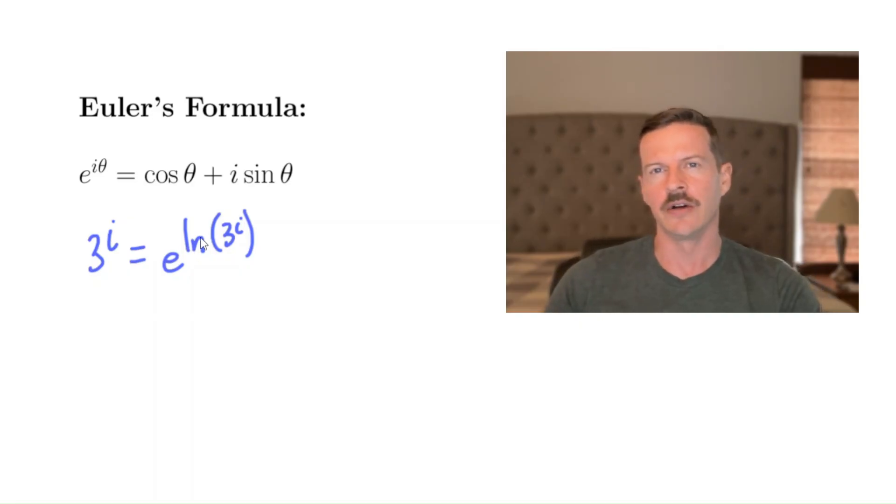In fact, it's usually written as just log instead of ln. But it's the inverse of the exponential function. And it turns out that we can use the same properties of logarithms that we're familiar with to bring this i out front. And write this as e to the i times ln of three.